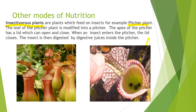When an insect enters the pitcher the lid gets closed, and the insect inside the pitcher is trapped by the hair present inside the pitcher. Then the pitcher secretes some digestive juices which help in digestion of the insect. This is how the pitcher plant shows dual mode of nutrition: autotrophic because it has green leaves, and also feeds on insects using digestive juices inside the pitcher.